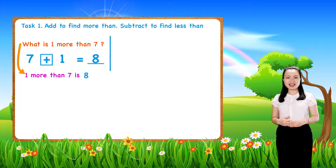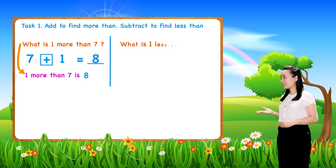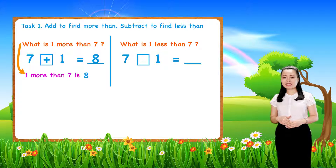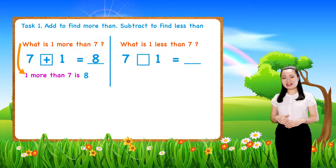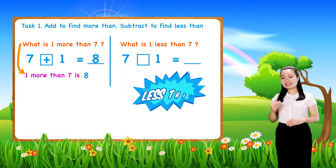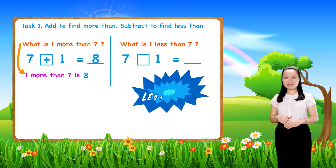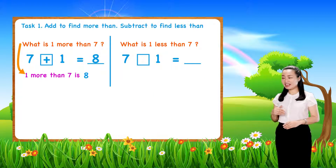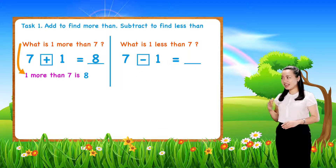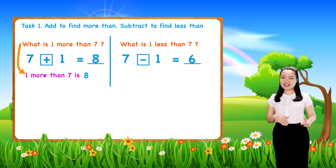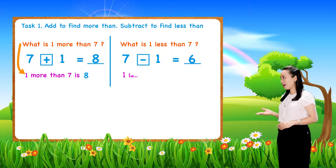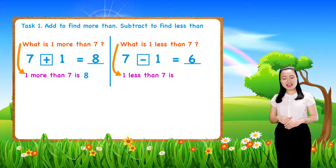Next, what is one less than seven? We can subtract to find less than. Here, seven minus one equals six. So, one less than seven is six.